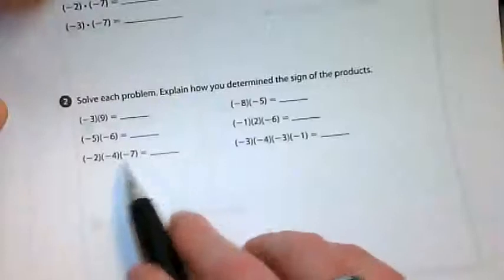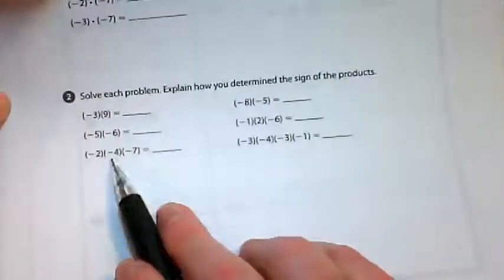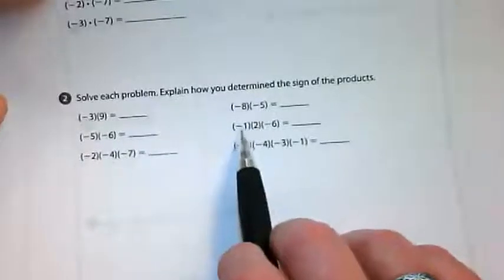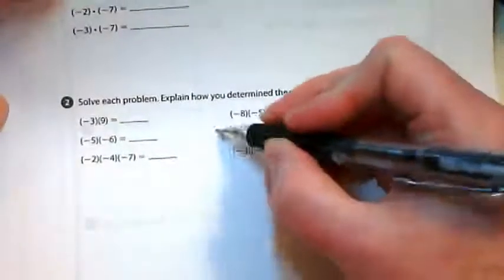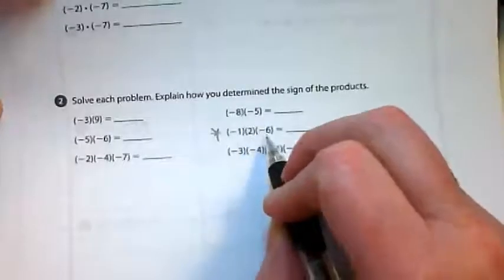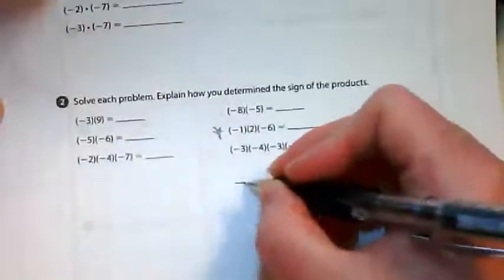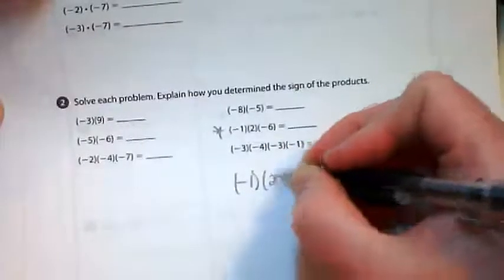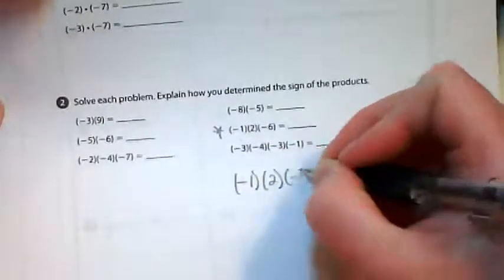So down here there's some similar problems, but there's some where instead of just two numbers, we're multiplying 3. So let's do this one together. Negative 1 times positive 2 times negative 6. And I'm going to use this workspace down below to rewrite it. Negative 1 times positive 2 times negative 6.